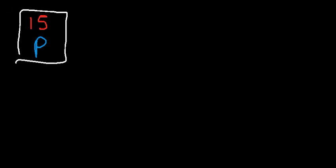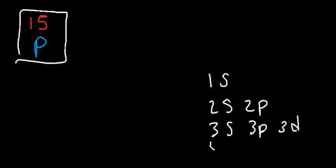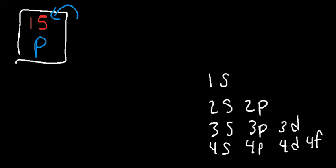Now let's talk about electron configuration, orbital notations, and so forth. Let's write the electron configuration for phosphorus, which has 15 electrons. The first energy level has one sublevel, the second has two, the third has three — 3S, 3P, 3D — and the fourth has four sublevels.